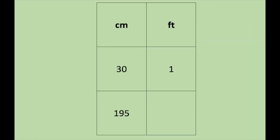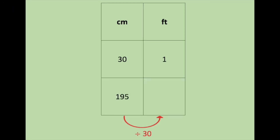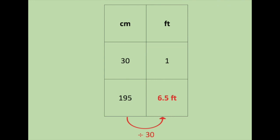The second example: 195 centimeters is how many feet. So at the top, centimeters, feet. The rule is that for every foot, we have 30 centimeters. So 30 goes under centimeters, one goes under foot. The information provided: 195 centimeters. So look at the rule. From 30 to 1, you divide by 30. So 195 divided by 30, that would be 6.5 feet.